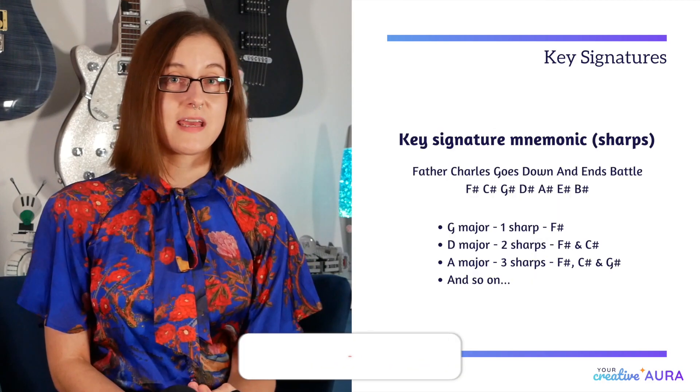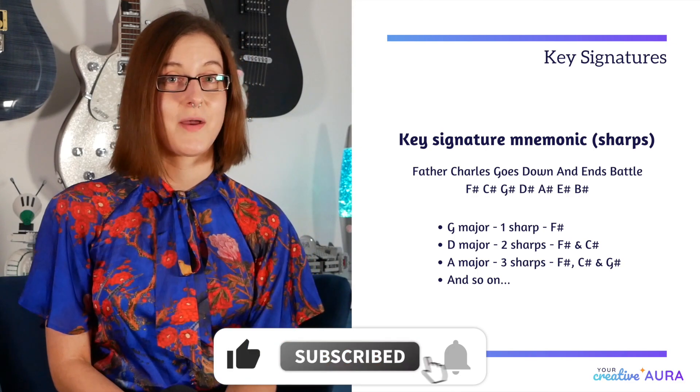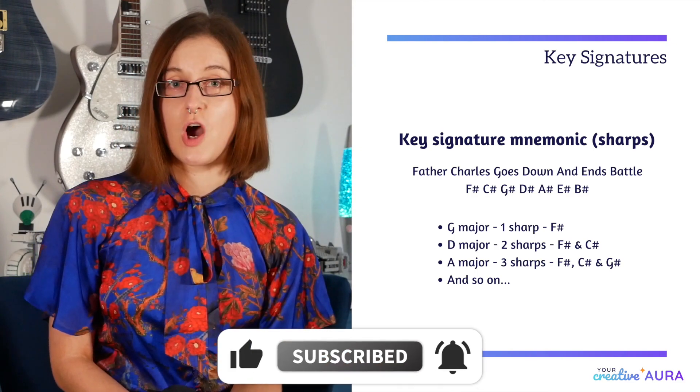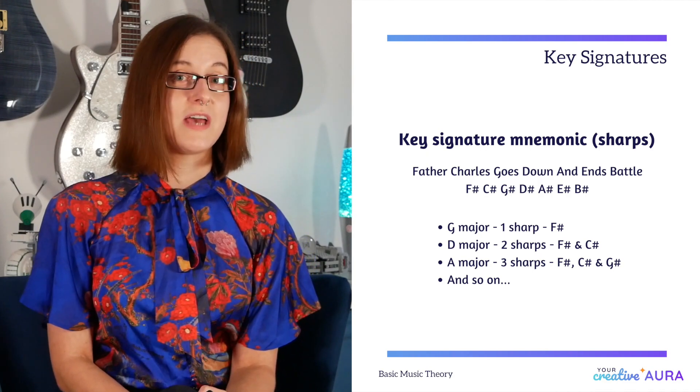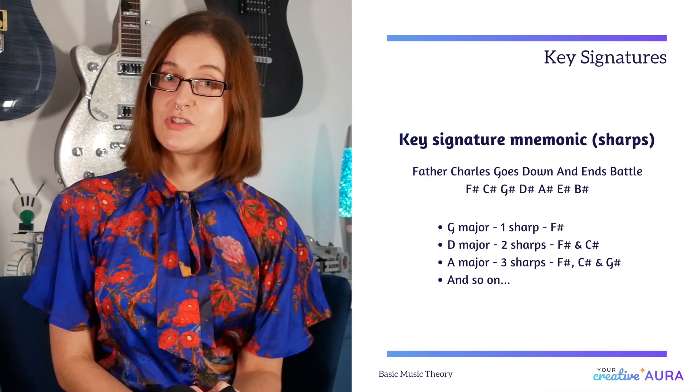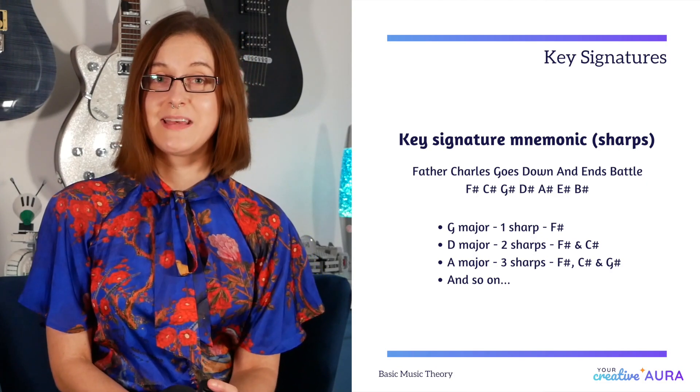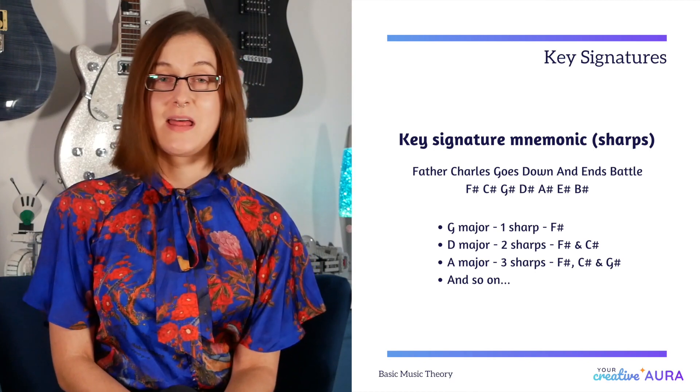Here we use a mnemonic to make remembering these flat and sharp notes easier. For adding sharps to a key signature, we have the mnemonic Father Charles goes down and ends battle: F sharp, C sharp, G sharp, D sharp, A sharp, E sharp then B sharp.